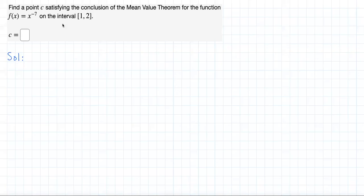Find a point C satisfying the conclusion of the Mean Value Theorem for the function f(x) = x^(-7) on the interval [1, 2].